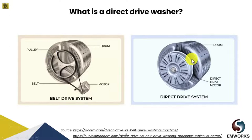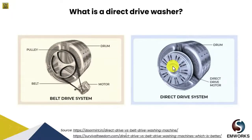On the right hand side we have a direct drive system. In a direct drive washer, the motor is typically mounted right underneath the tub. The direct drive motor uses a complex set of electromagnets to produce torque that in turn spins the tub of the washing machine.